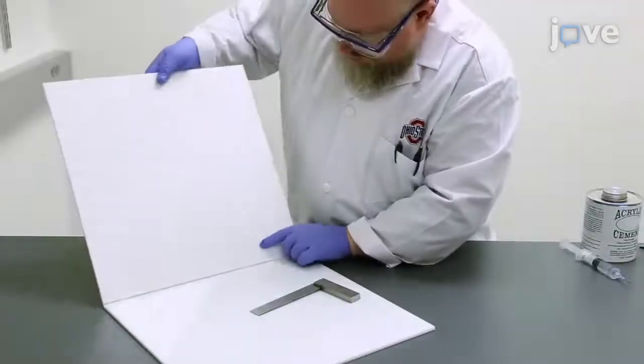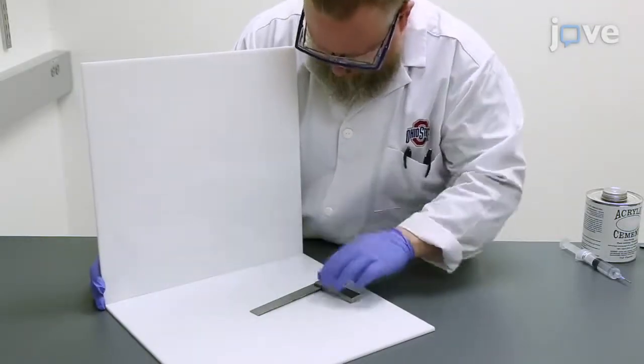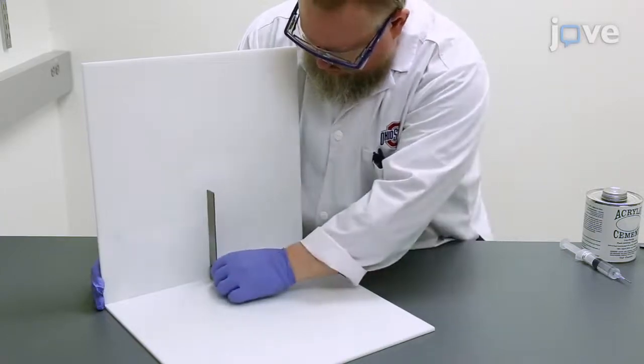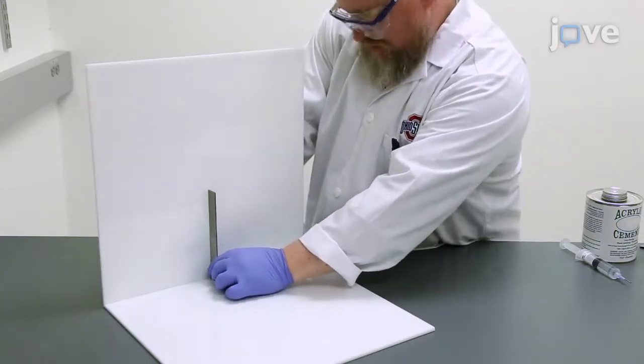Align the long edge of an outside wall with the top edge of the base, and ensure that they are perpendicular to each other using a combination or machinist square.